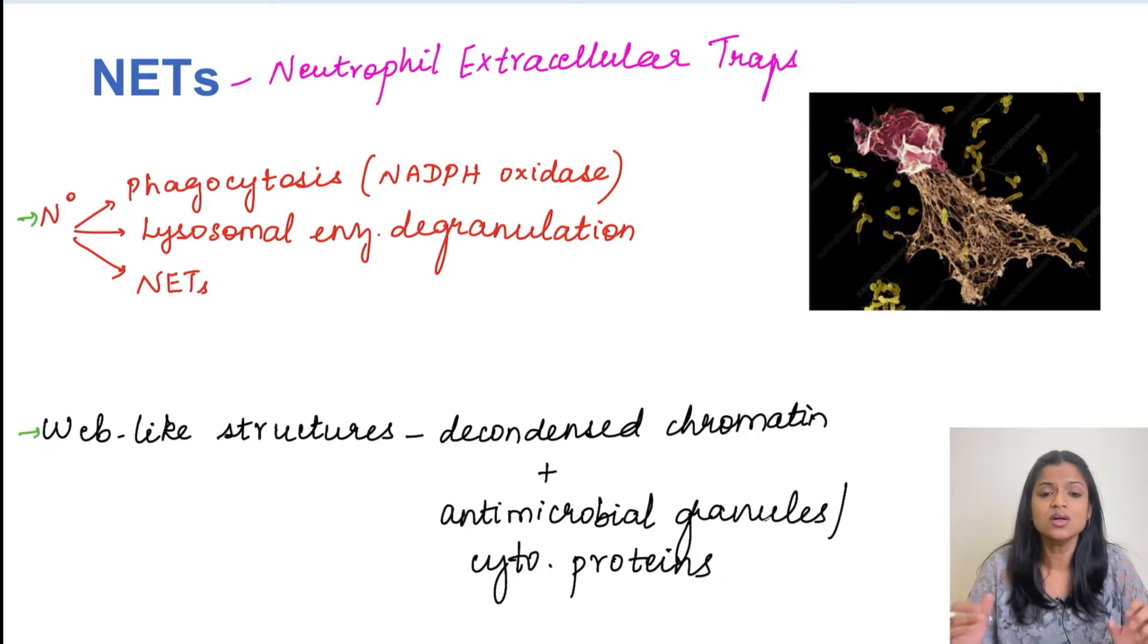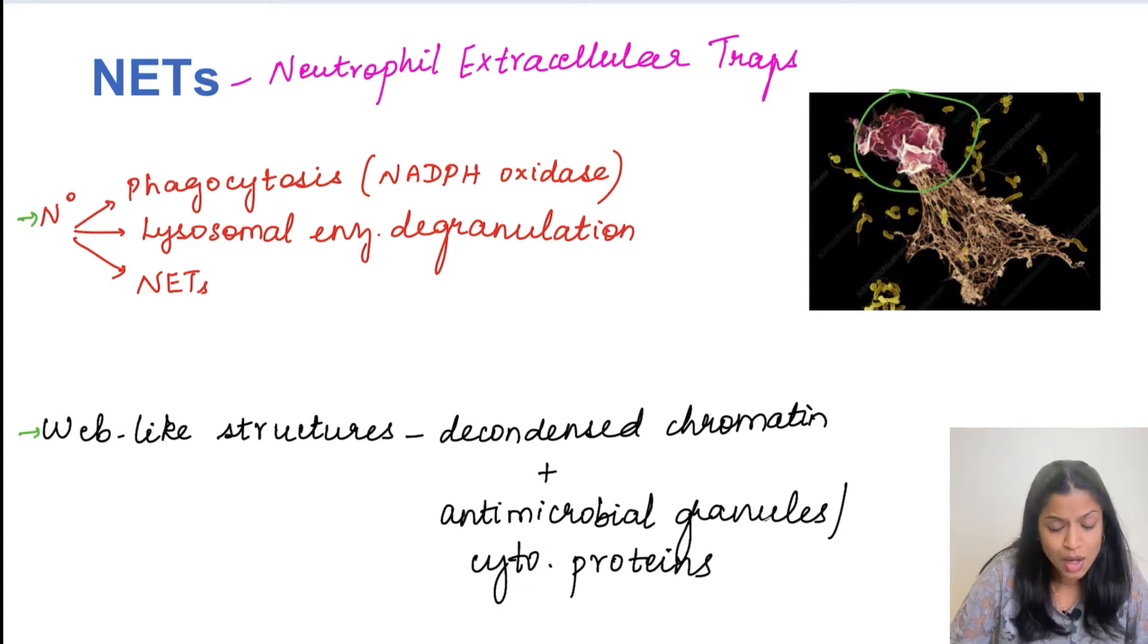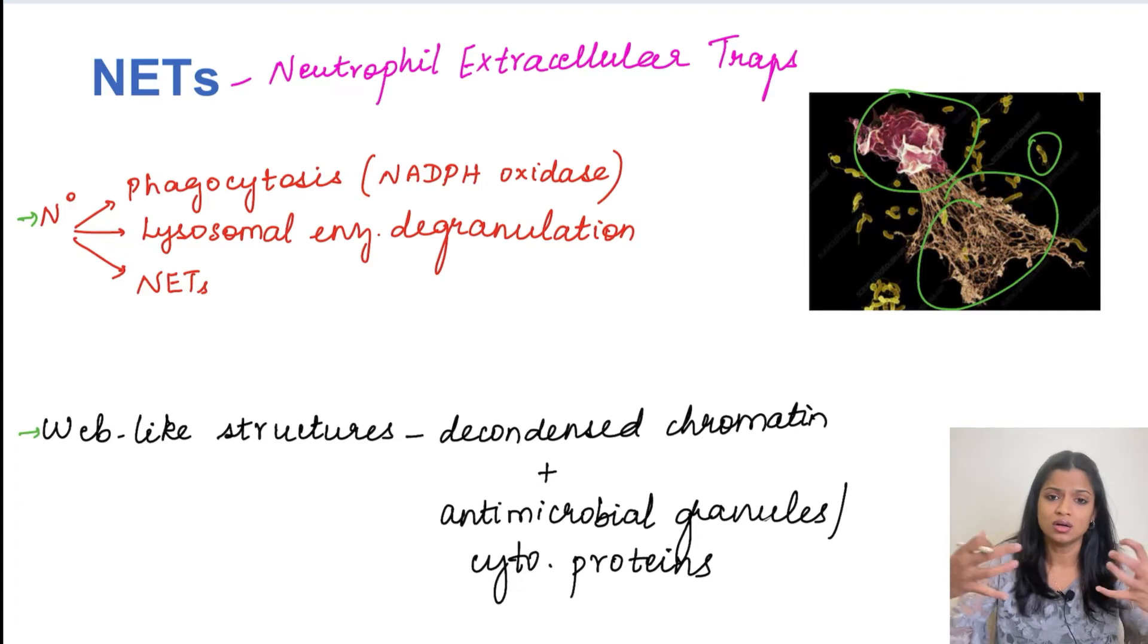So this forms a web-like structure. As seen in this diagram, you can see this part is the neutrophil which is extruding its DNA material here along with the granules. So these are the bacteria which are going to be trapped by this neutrophil extracellular trap.